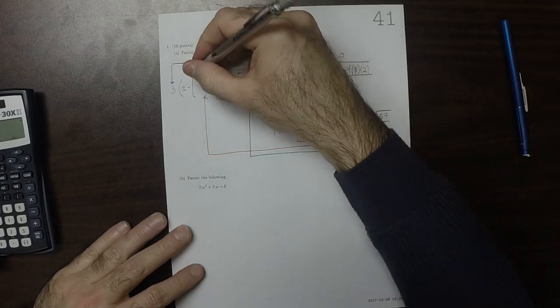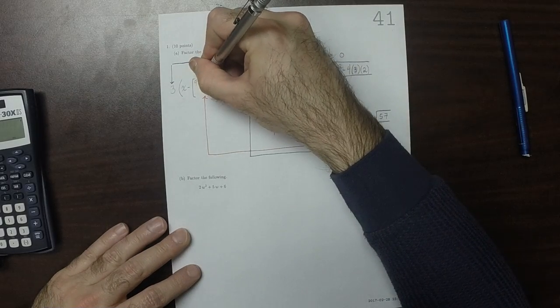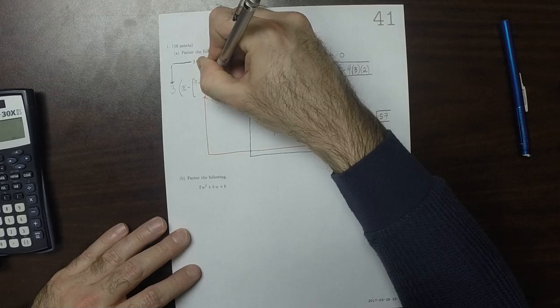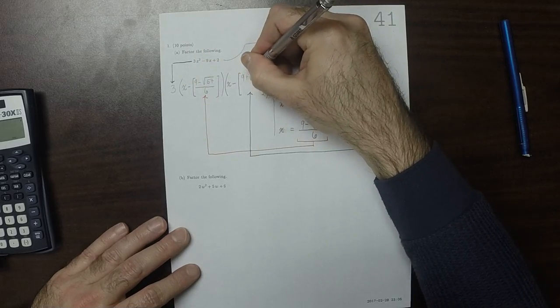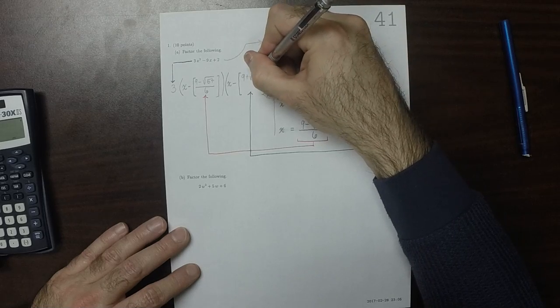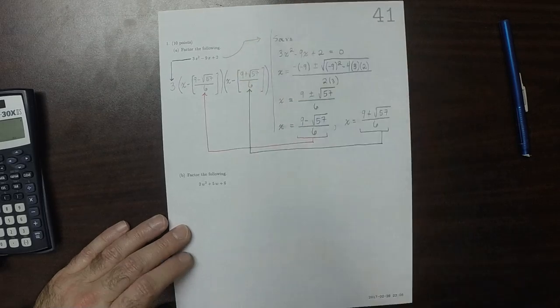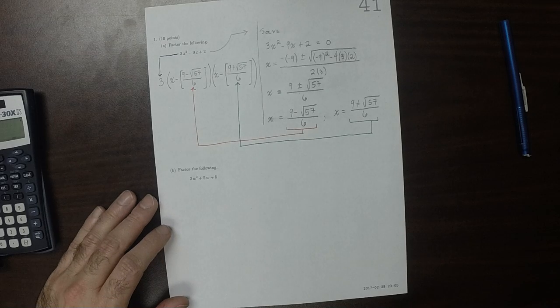So just copying now. That would be 9 minus square root 57 divided by 6, and 9 plus the square root of 57 divided by 6. Okay. So we factored it.